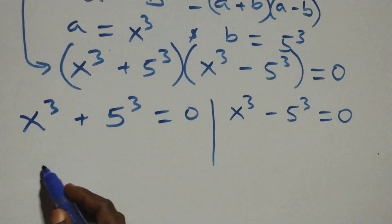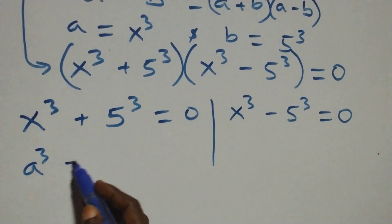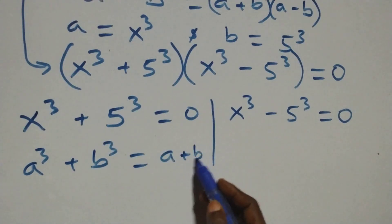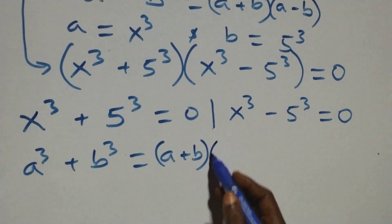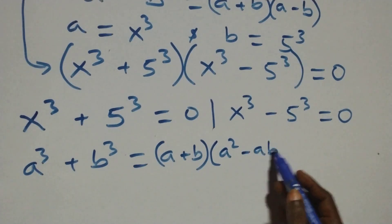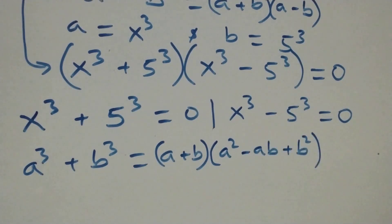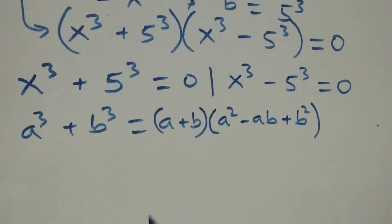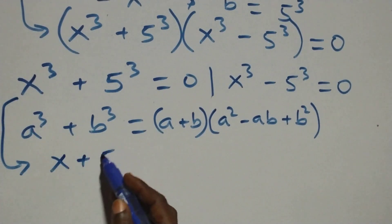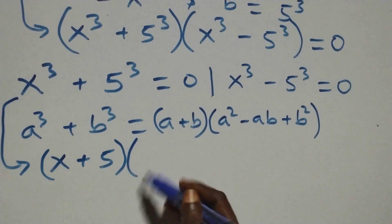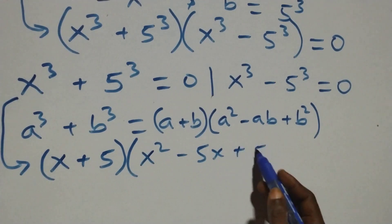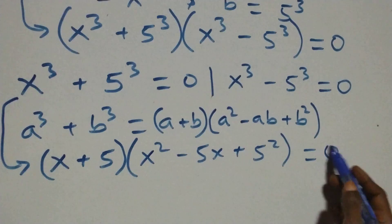Solving the first case, this follows the identity a cubed plus b cubed equals a plus b times the bracket a squared minus ab plus b squared. Applying this, it becomes x plus 5, times bracket x squared minus 5x plus 5 squared, close bracket, equals to 0.